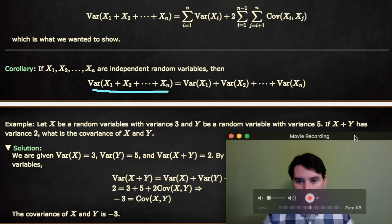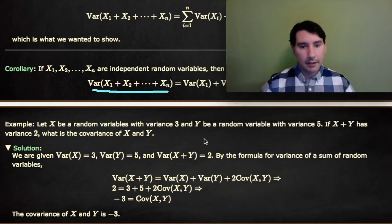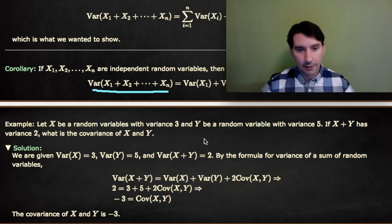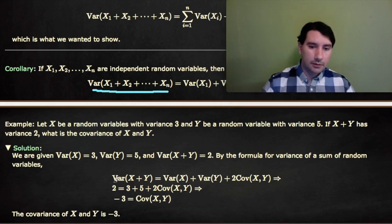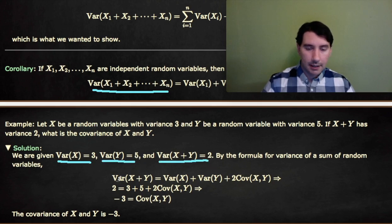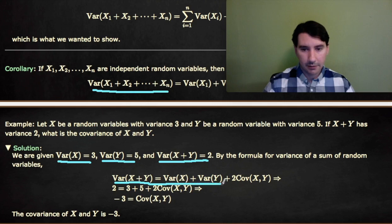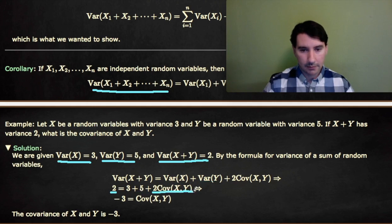Let's look at an example. Let X be a random variable with variance 3, and Y be a random variable with variance 5. If X plus Y has variance 2, what is the covariance of X and Y? We know variance of X equals 3, variance of Y equals 5, and variance of X plus Y equals 2. By the result above, variance of X plus Y equals variance of X plus variance of Y plus 2 times covariance of X and Y.